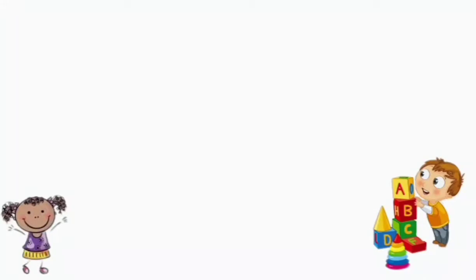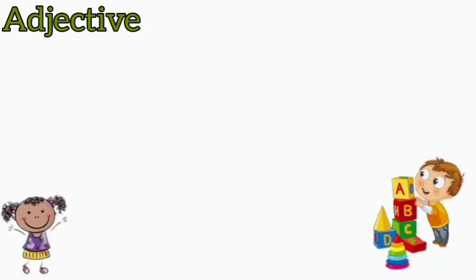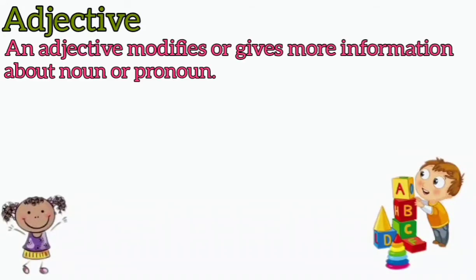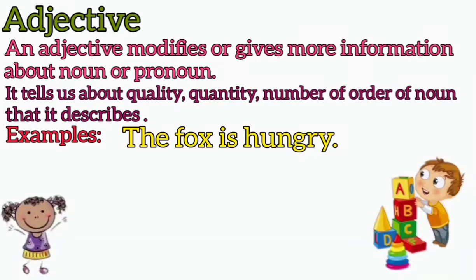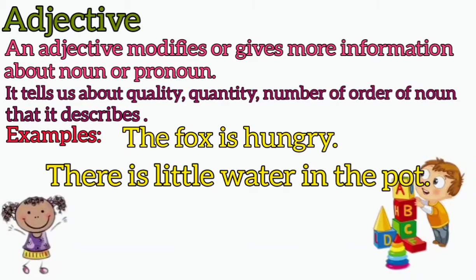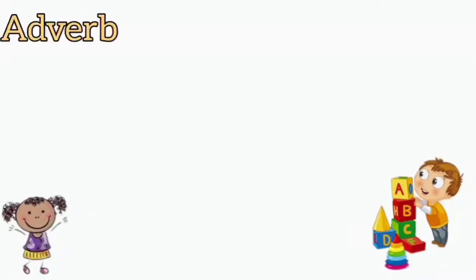The next part of speech is adjective. An adjective modifies or gives more information about a noun or a pronoun. It tells us about the quality, quantity, number, or order of the noun it describes. For example, 'The fox is hungry.' Here 'hungry' is the adjective since it tells the quality of the fox. The next example is 'There is little water in the pot.' Here the adjective is 'little' because it tells us about the quantity of water.